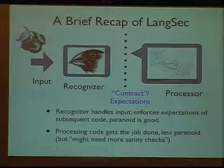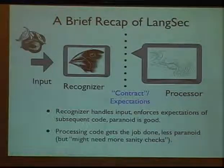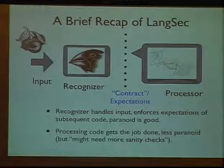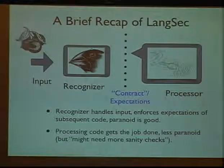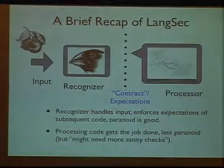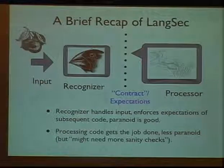Once recognition is complete, either the input is accepted or rejected. Then expectations can be enforced on the subsequent code via design by contract. Then, and only then, once all of your assertions have passed — this is Security 101 — you can safely process.